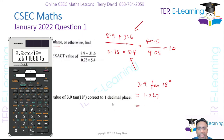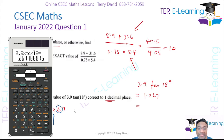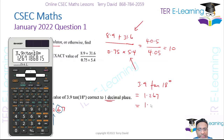They want us to give our answer to one decimal place. So we have 1.267 — the first decimal place is the 2. We need to pay attention to the 6, because that six is more than five, so we must increase the 2 by one. Therefore my answer is 1.3 to one decimal place.